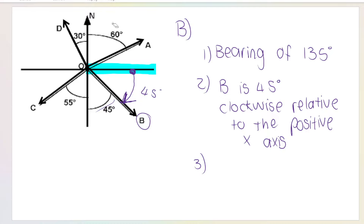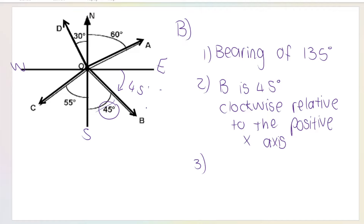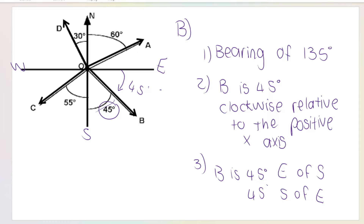Method number three for vector B is compass points. We've got north, east, south, west. Vector B is over here. We can say vector B is 45 degrees east of south, or you can say 45 degrees south of east. This is the only time when you can say either one. If you use this 45 degrees over here, vector B is south of east — it's going to the south of east. If you use this one, it's going 45 degrees east of south.